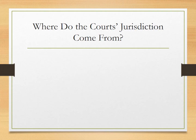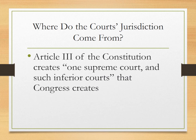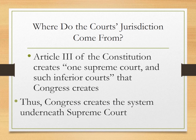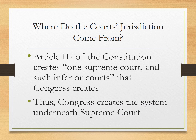Now, where did the court's jurisdiction come from? In our Constitution, Article 3 says that they create one Supreme Court and such inferior courts created by Congress. So Congress creates the system underneath the Supreme Court.